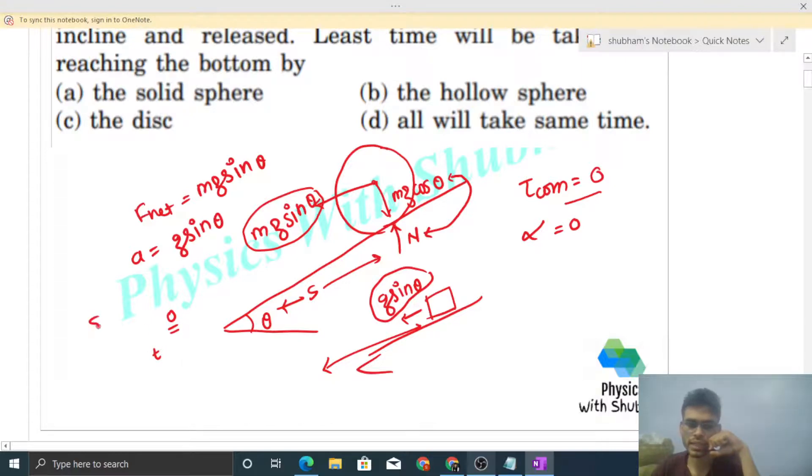Then we can say the time taken, if we write s = ut + half at squared, if u is zero then ut becomes zero, then time taken simply is equal to root of 2s by acceleration, which is g sin theta. So it will be same for all.